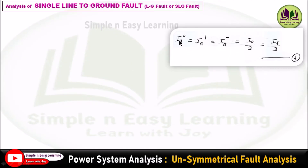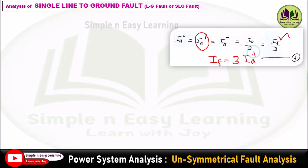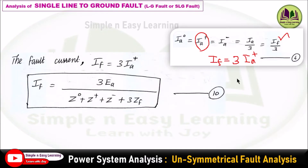Step 7 — find the fault current. From equation 4: ia0 = ia+ = ia− = ia/3 = if/3. Therefore if = 3 × ia+. Substituting equation 9: if = 3 × ea / (z0 + z+ + z− + 3zf). This gives the complete expression for the fault current in a single line to ground fault.